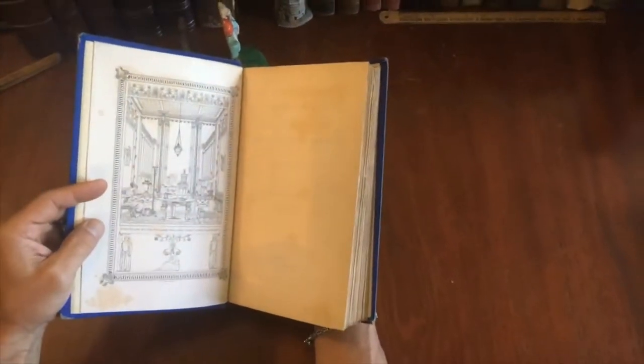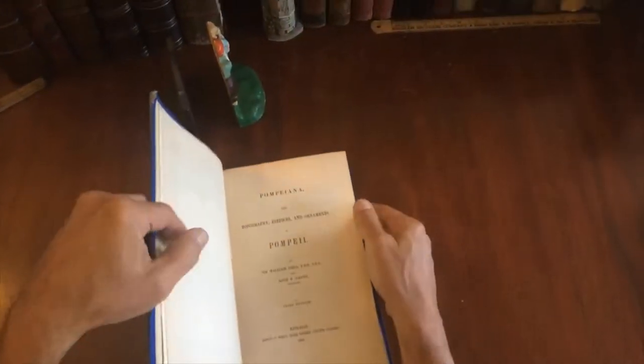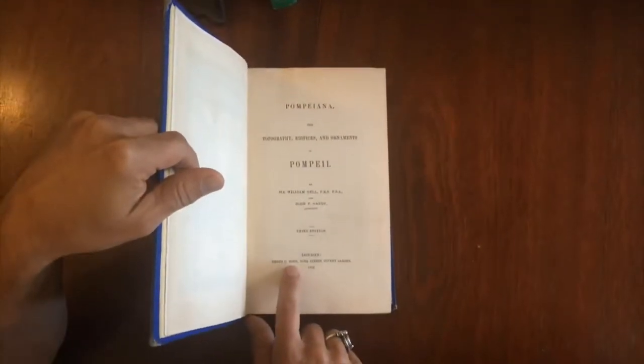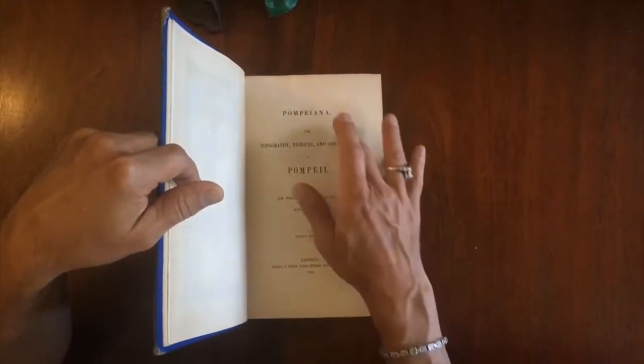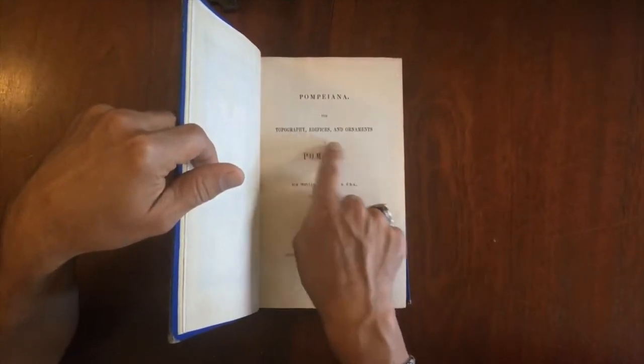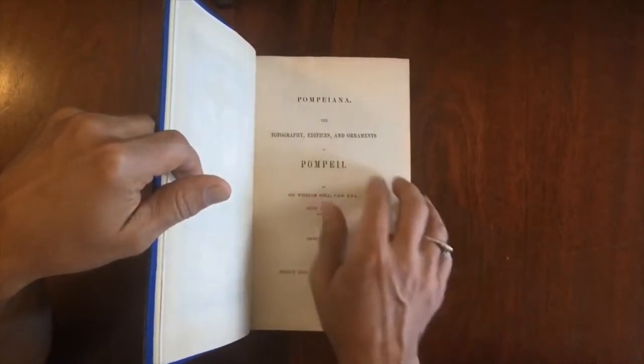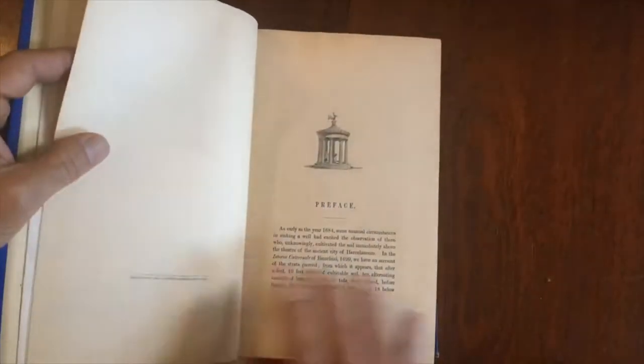There is this engraved frontispiece here with a tissue guard, and it is 1852 by Henry Bone, a well-known publisher at this time. Published beautiful, attractive cloth-bound books. Pompeiana, and it is all the topography, the buildings, architecture, and the ornaments of Pompeii by Gell. It's a well-known book, third edition.